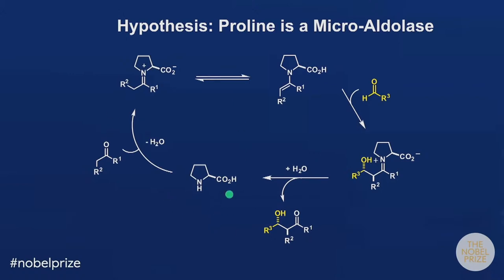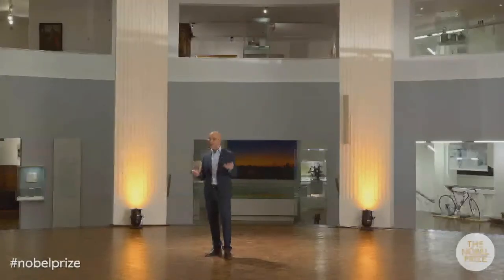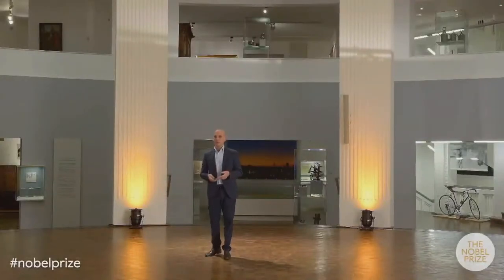This is the hypothesis I developed as a fresh assistant professor at Scripps. I hoped that proline would function like a microaldolase, by converting first the ketone — assisted by the Brønsted acid — into the corresponding iminium ion, and then the carboxylate would deprotonate this iminium ion to form the corresponding enamine. The enamine in turn would react with an aldehyde to form the carbon-carbon bond, with proton transfer in the transition state onto the oxyanion of the aldehyde being formed, and then the iminium ion in the last step would be hydrolyzed with water to form the aldol product and regenerate the proline catalyst. This was the hypothesis I developed — and when I did the experiment, it actually worked.